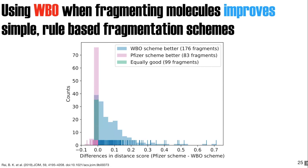When we compare these distance scores to the simple rule-based scheme from the Pfizer group, the Pfizer scheme does find good fragments in many cases. However, for cases with sensitive bonds and remote substituents, our scheme performs better. While the simple scheme sometimes performs slightly better and many cases are equally good, when our scheme does better, it does so specifically for molecules with sensitive bonds.